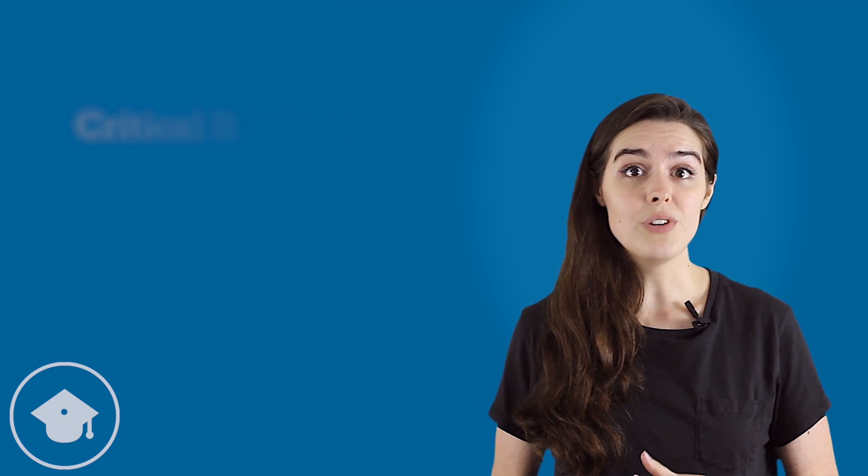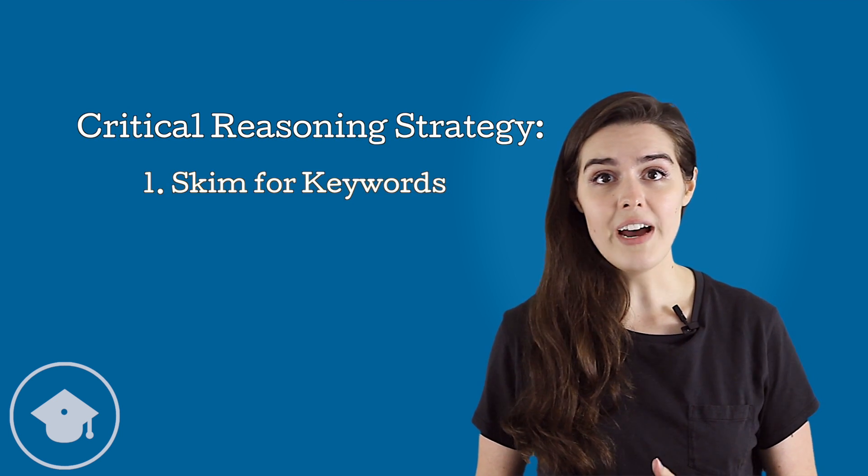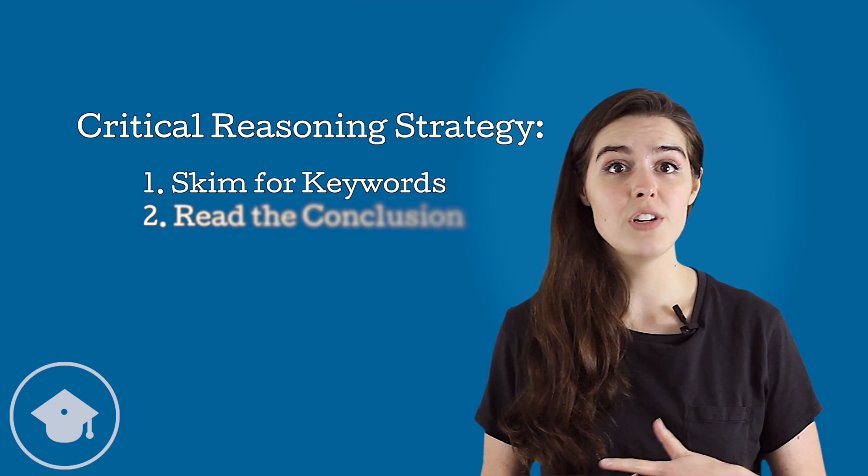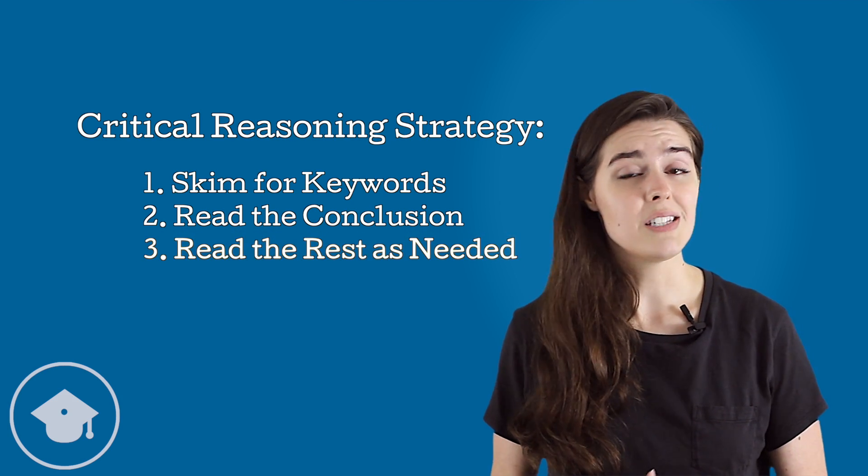So when we see a critical reasoning passage, we should start by first, skimming for a cause and effect or conclusion keyword. Second, carefully reading the sentence it's in. And then third, only fully reading the rest of the argument as necessary based on the question.